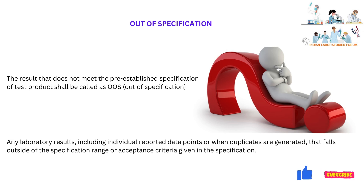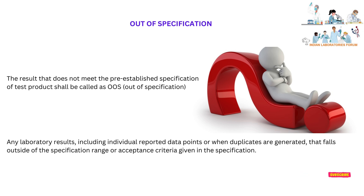What is Out-of-Specification? The result that does not meet the pre-established specification of the test product shall be called Out-of-Specification. It means any laboratory results, including individual reported data points or when duplicates are generated, that fall outside of the specification range or acceptance criteria given in the specification.